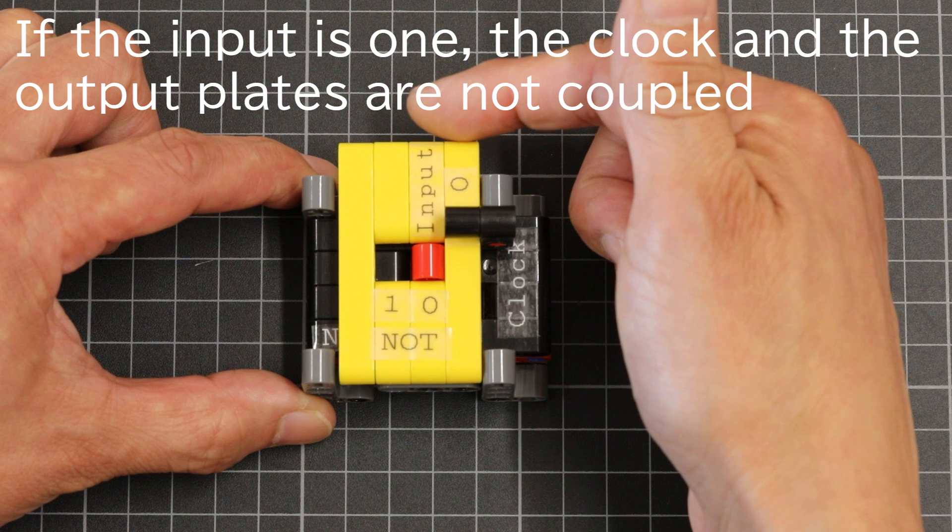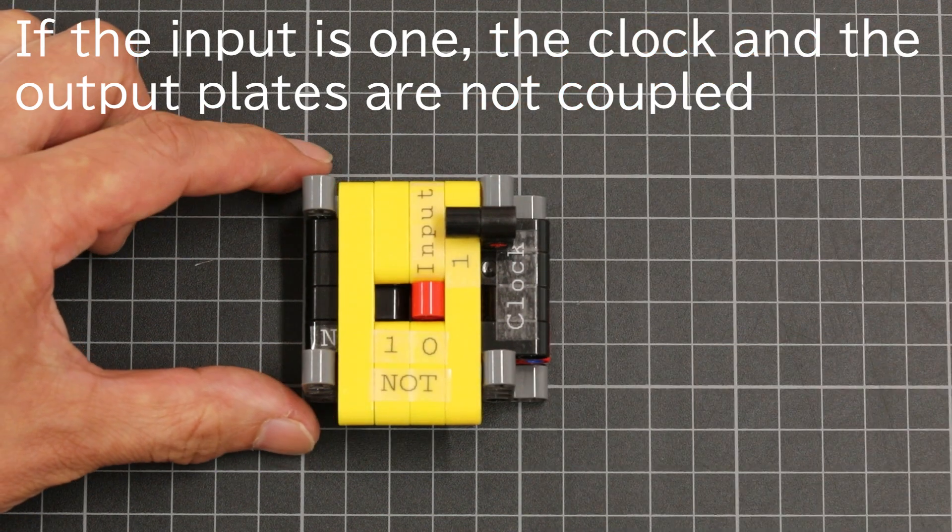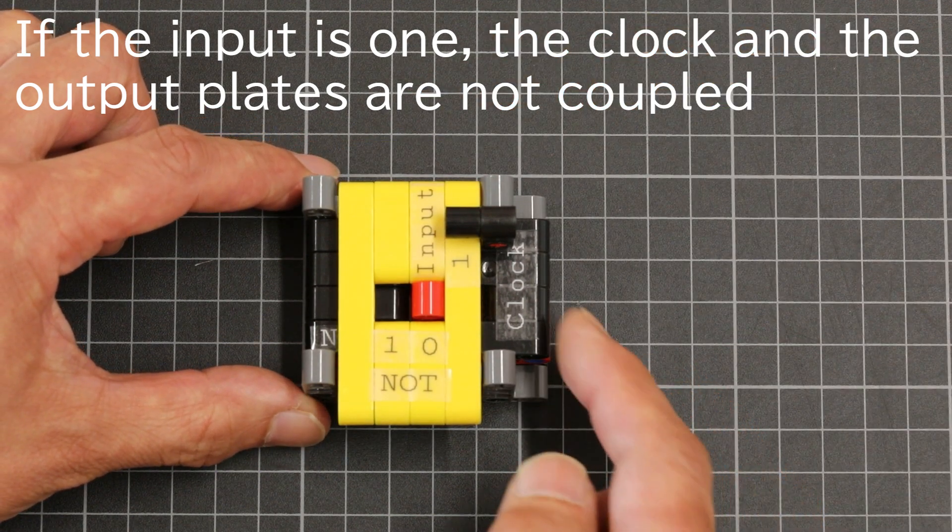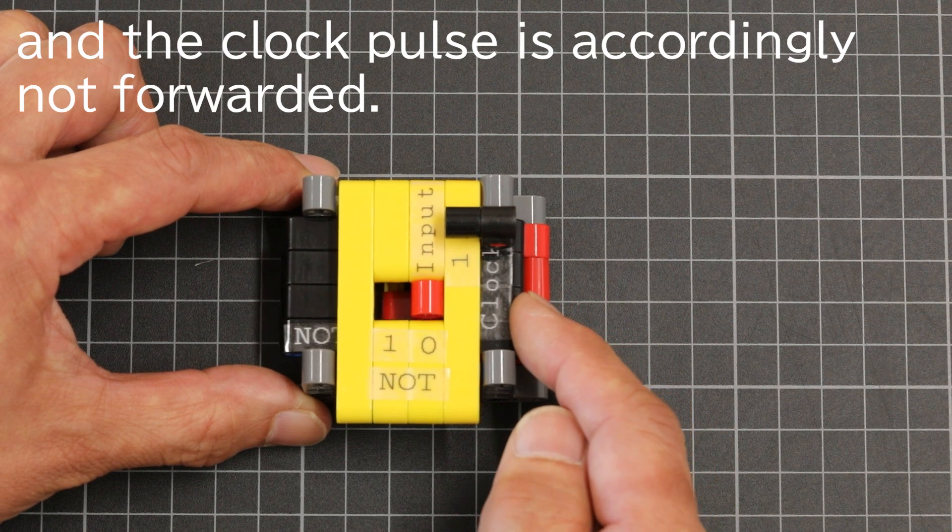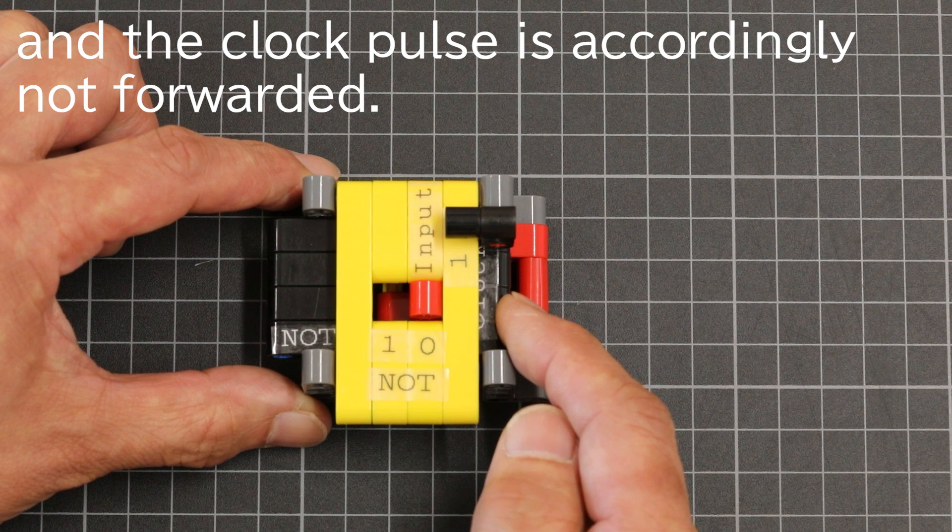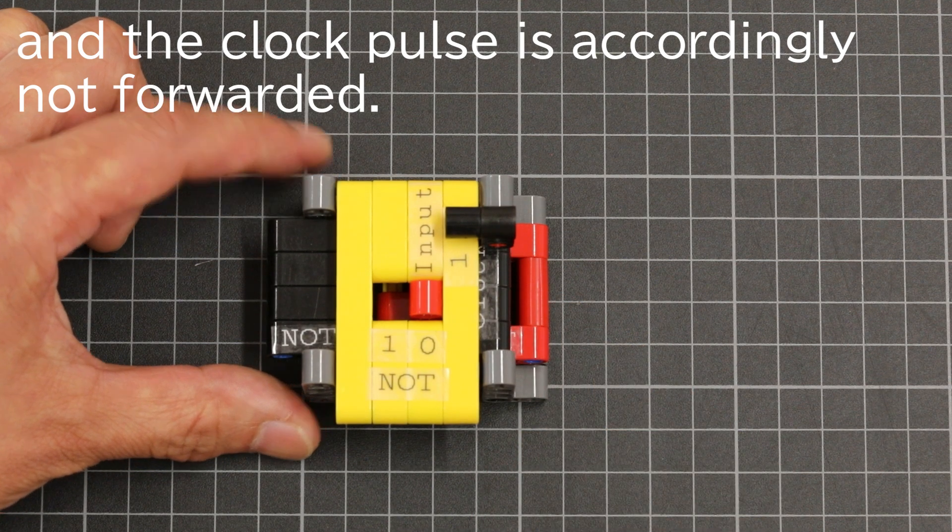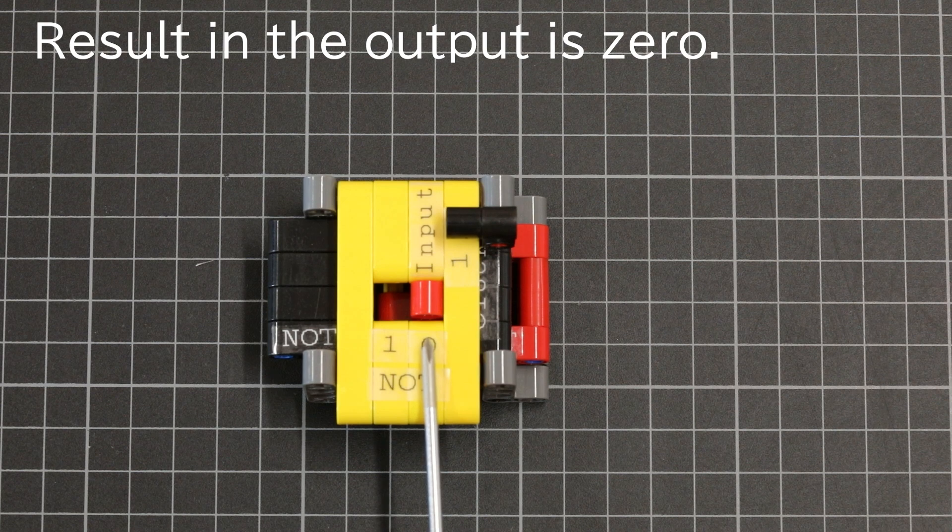If the input is 1, the clock and output plate are not coupled and the clock pulse is accordingly not forwarded. The result in the output is 0.